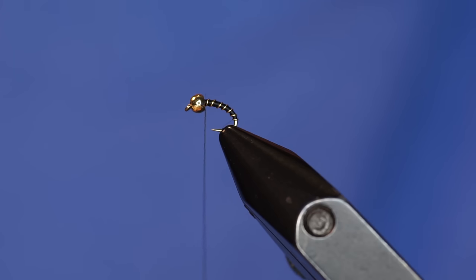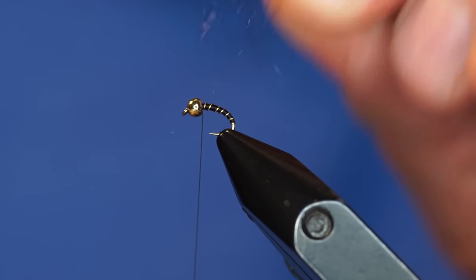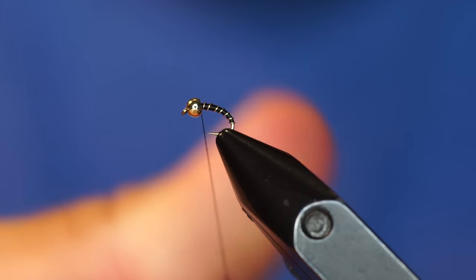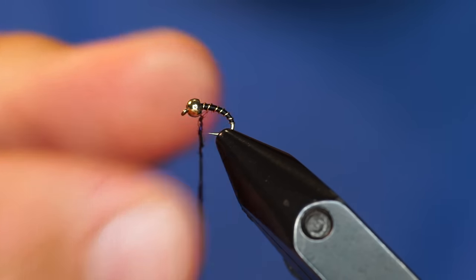Technically, you could fish that just as is. I always like to add a little bit of dimension of flash. As you can see, I have just a few fibers of this black ice dub, and I'm just going to put barely enough on this thread just to make it dirty a little bit. See that?